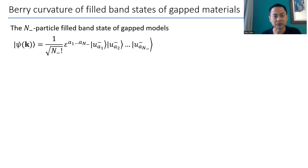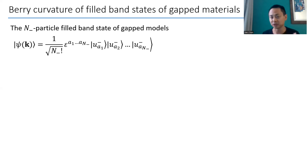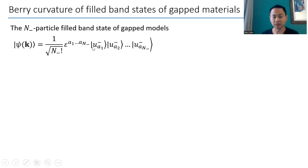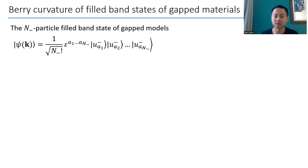Now because we're interested in fermions, we consider that each state, as labeled here as U_{a1}, U_{a2}, all the way up to U_{aN-}, suppose we have N- such bands altogether. They may be degenerate or not, and may include spins and so on. Because they are fermion states, you have to make it fully anti-symmetric and construct a fully anti-symmetric Slater determinant state.